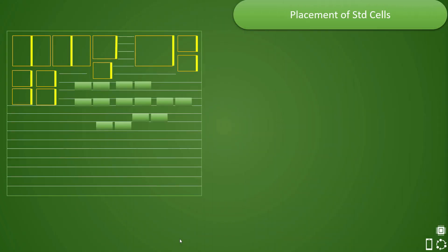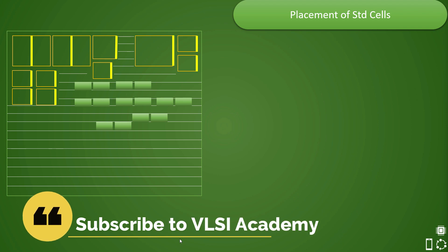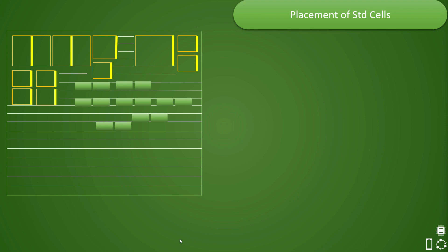Let us start our discussion with the assumption that macros are already placed and rows are cut, and you have already placed tap cells, cap cells, and other physical-only cells which are needed in the design before placement.